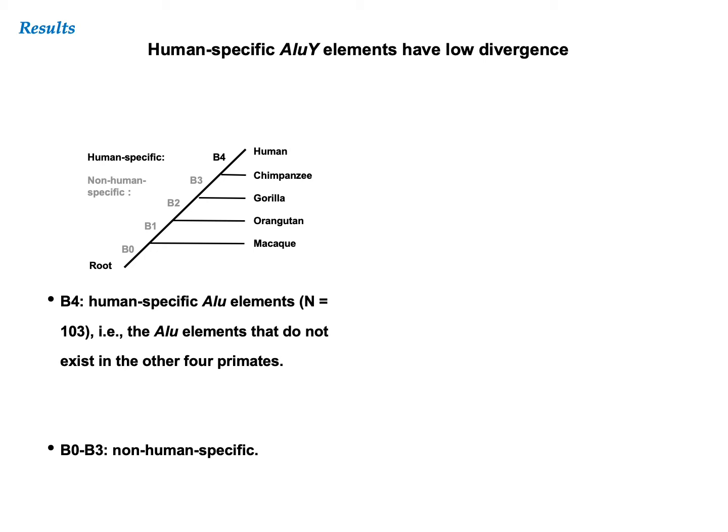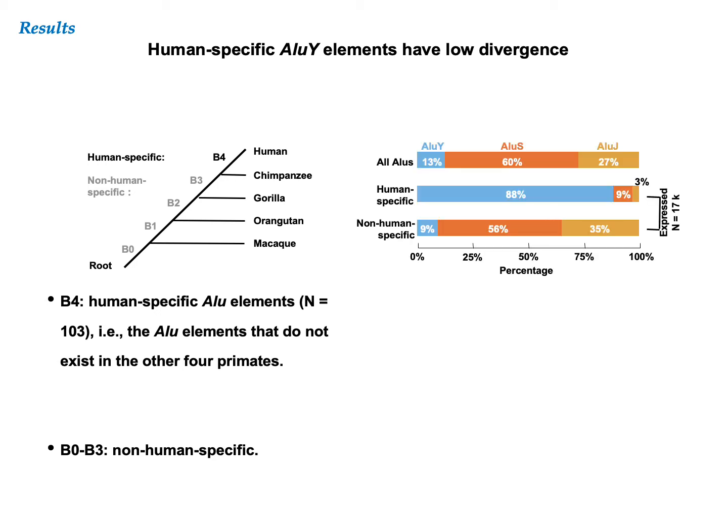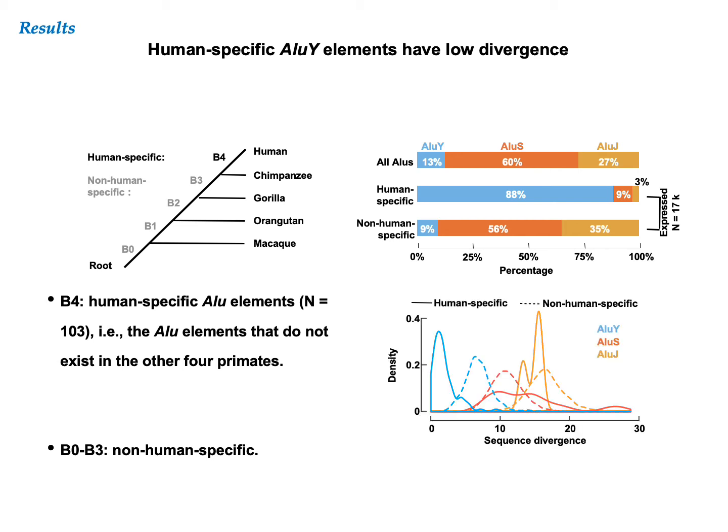So we went further by defining human-specific elements, which do not exist in four other primate genomes. The vast majority of expressed human-specific Alu elements, 88 percent of them, are in the AluY family, while the expressed non-human-specific Alu elements show similar family composition as all annotated Alus. Among the expressed Alu elements, the human-specific AluYs have significantly lower sequence divergence than the non-human-specific AluYs, while the difference is much smaller for the AluS and AluJ families.